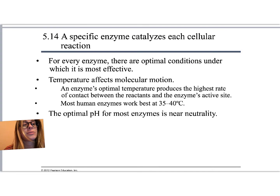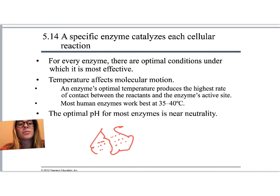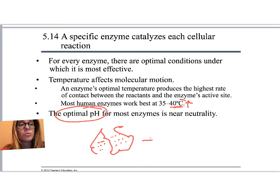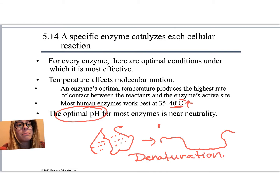Enzymes are picky not just about the substrate — they also have to be in just the right conditions. An enzyme is a folded molecule, and that folded structure requires a specific temperature or specific pH to keep those hydrogen bonds and weak bonds in the right shape. If the temperature goes too high — above about 40°C — or if the pH is too high or too low, the enzyme starts to unfold. An unfolded enzyme doesn't work anymore; this is called denaturation, or sometimes we say the enzyme has melted.